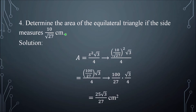Number 4. Determine the area of the equilateral triangle if the side measures 10 over √27 centimeters. Copy the area formula: A = s² × (√3 / 4). Then plug in 10/√27 and substitute that for s.